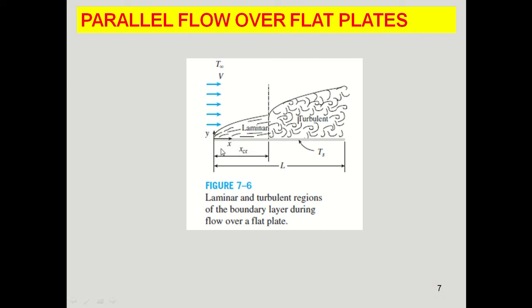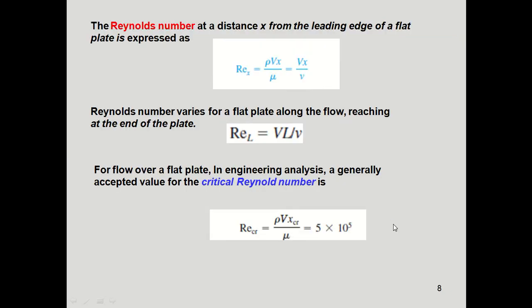Where the laminar boundary layer converts to turbulent, the distance is denoted x_critical — that is, the x value at which laminar flow transitions to turbulent. T_s is the surface temperature of the plate. The Reynolds number at a distance x from the leading edge is expressed as Re_x = ρVx/μ = Vx/ν, where V is velocity, x is the distance from the leading edge, and ν is the kinematic viscosity.